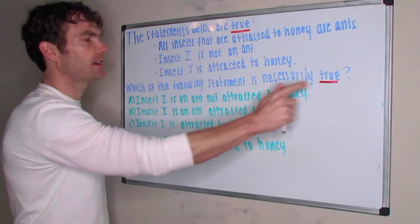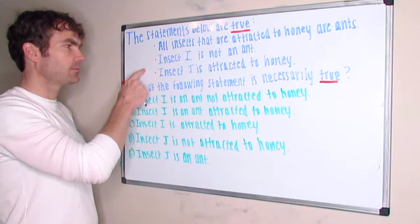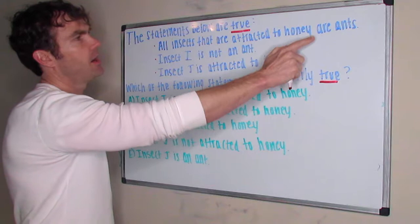On a problem like this, before I read the answer choices, as I'm reading these I would think about what they mean. So all insects that are attracted to honey are ants...